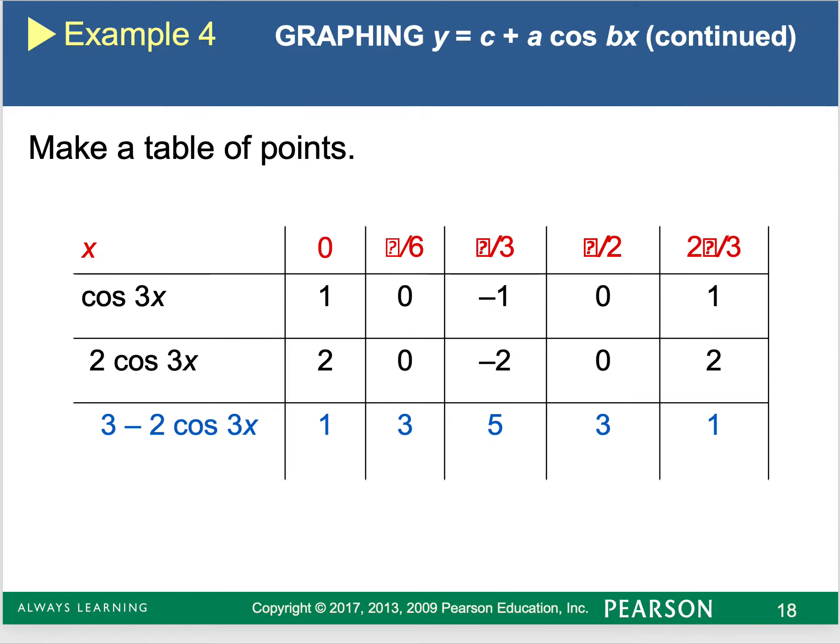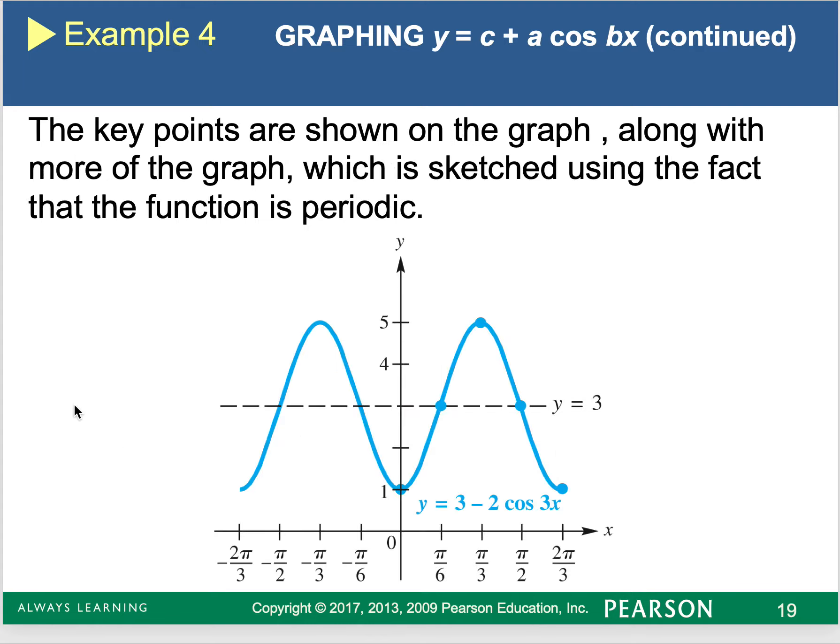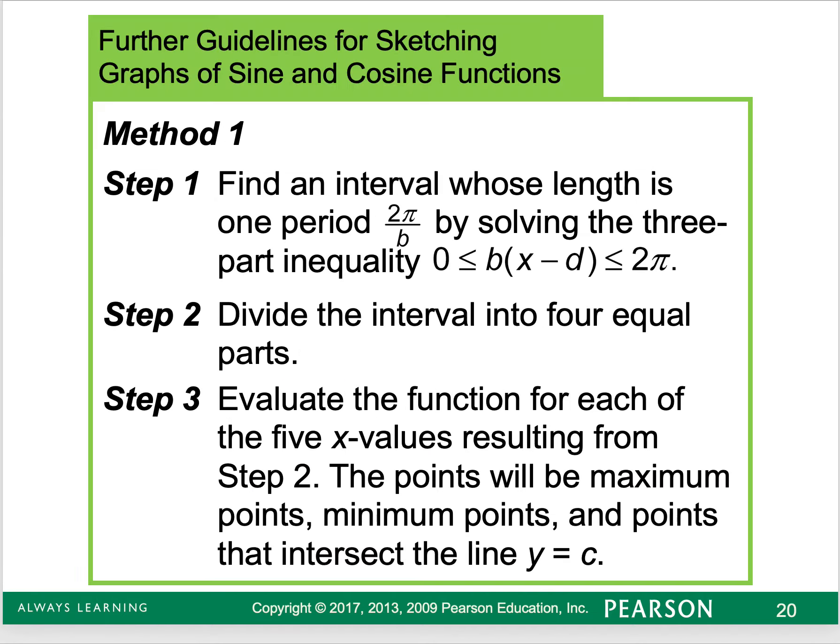Once I get those four equal values, I'm going to set up my table. So I'm going to do cosine of three x, then what is two times cosine of three x, then what is three minus that? So I'm plugging in zero, π over six, π over three, π over two, 2π over three for the x right here. That's where these values are coming from. Now remember, if you're doing this in your calculator, please make sure your calculator is in radian mode. Once you get that, you're going to plot your points, and you're going to see that nice cyclical nature.